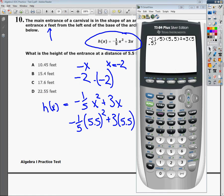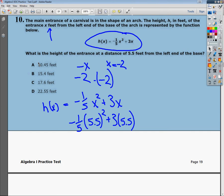So when I go ahead and hit enter, it tells me the height from 5.5 feet would be 10.45, which is A. And that's the correct answer. So really all they're asking you to do is substitute things in.